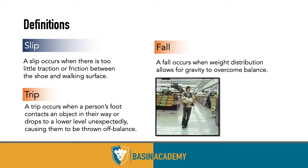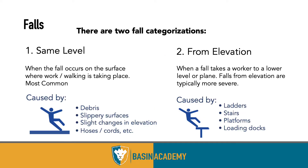A same-level fall is essentially what it sounds like — someone is on the exact same level where they're working or walking when the fall occurs. This can happen because debris is in the way, there's a slippery surface, a slight change in grade, or hoses and cords get in the way. A fall from elevation involves an actual height difference — as simple as a crack in the sidewalk, or a five-, six-, or ten-foot fall — and these are typically more severe due to gravity and momentum.